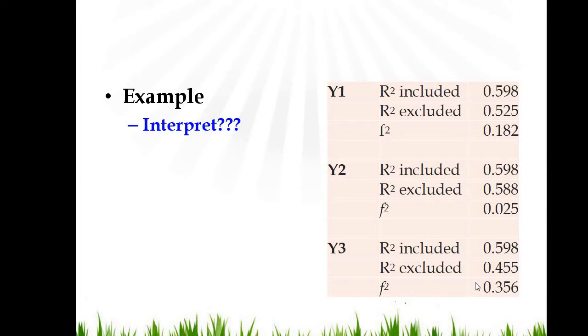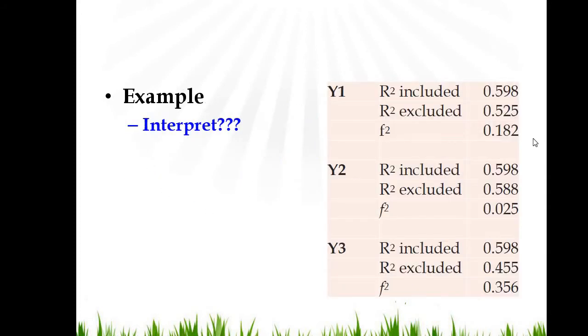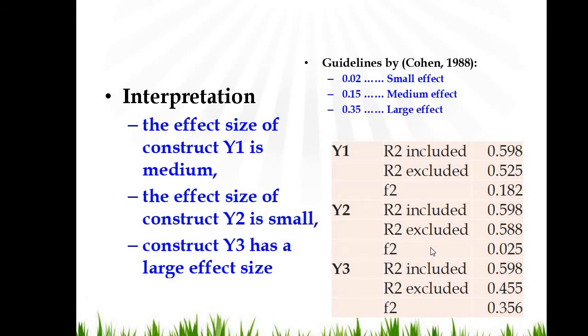You see here, this effect size is very large, so it has big contributions. Here in this case, it is very small, so the exogenous variable has very small contributions, whereas here it is moderate contributions. If you look at this criteria, you will find it is moderate or medium level. Here it is small, and here it is large.